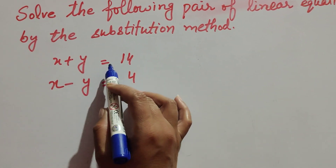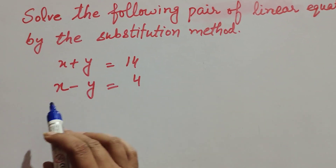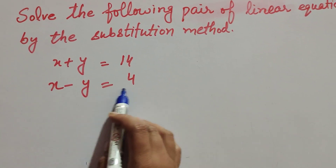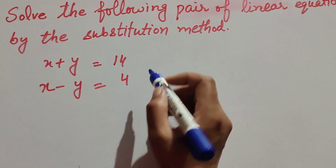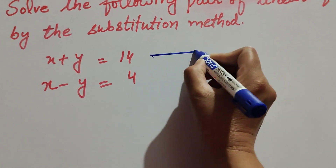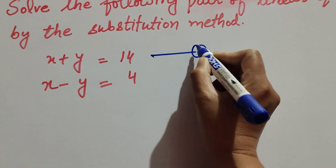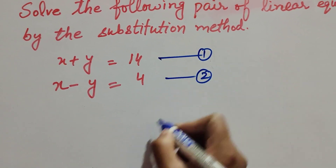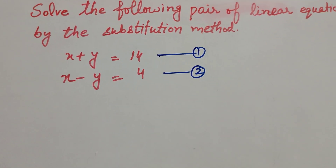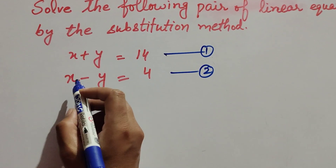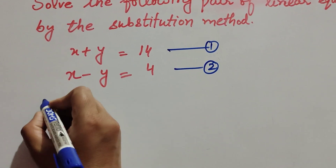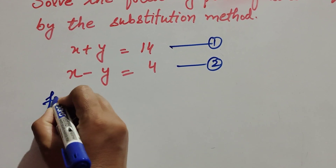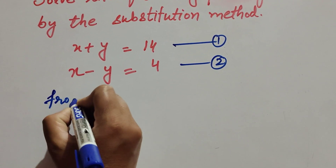The two equations are: x plus y equal to 14, which we mark as equation 1, and x minus y equal to 4, which we mark as equation 2.